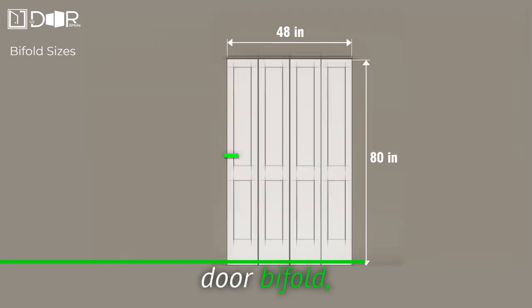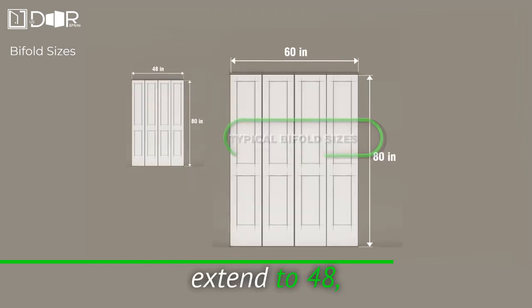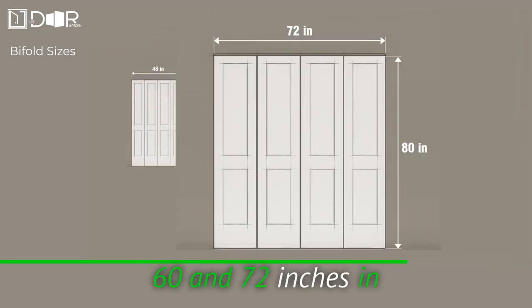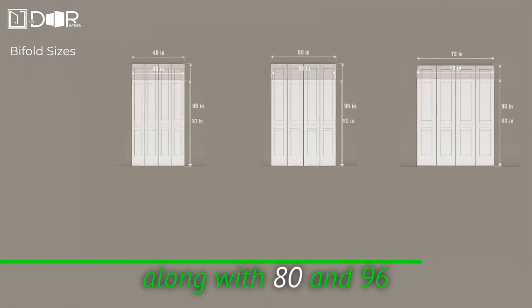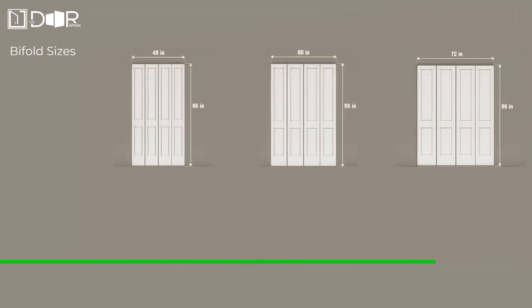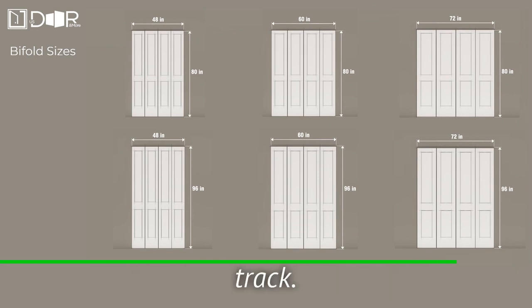When it comes to four-door bifolds, the sizes are wider. Standard dimensions extend to 48, 60, and 72 inches in width, along with 80 and 96 inches in height. These designs feature two bifolds on a single track.